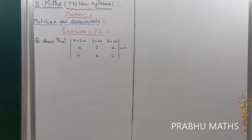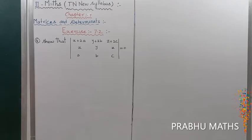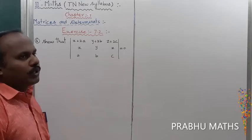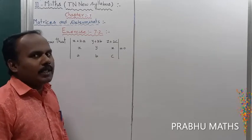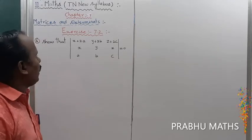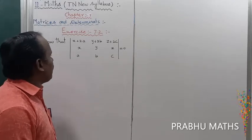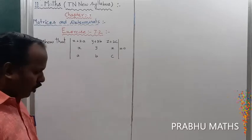The sixth sum shows that the determinant of X plus 2A, Y plus 2B, Z plus 2C, then X, Y, Z, then A, B, C is equal to 0.